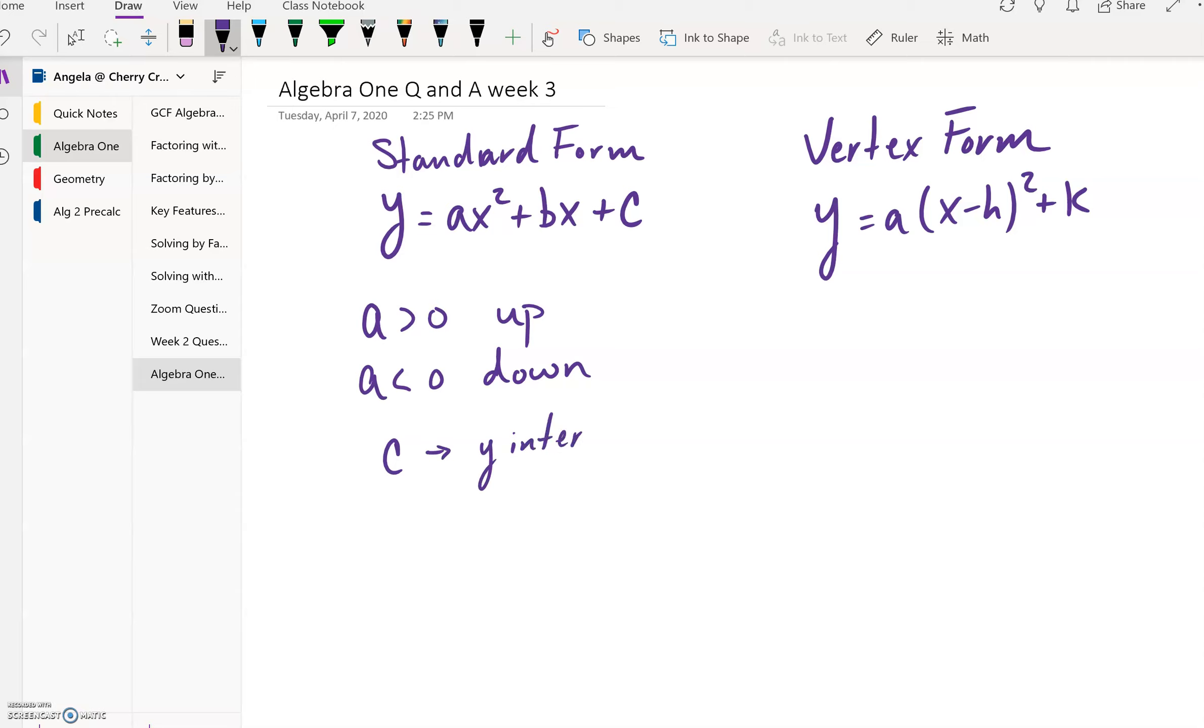The a value here is going to mean exactly the same thing as it does in standard form. So your a value is that value that helps you to know whether or not your parabola is going to open up or it's going to open down.